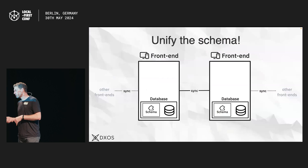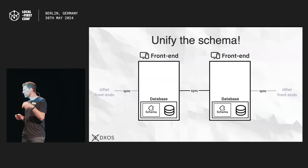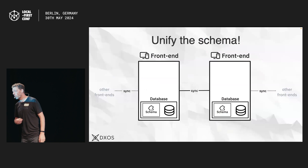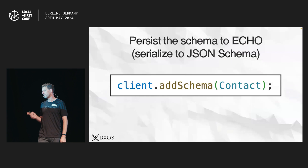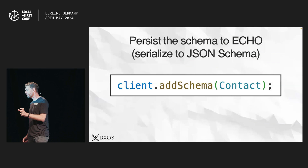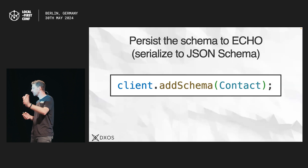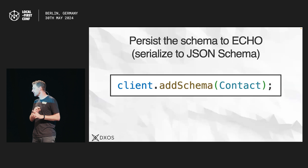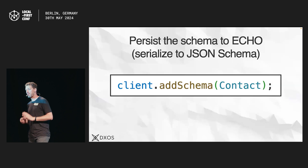Local-first software's flat architecture allows you to unify all your schema definitions in a single place, but we can push this even further. What if you took the schema for the data and saved it to the database? Effect Schema supports serializing the schema as JSON Schema, so this one line will actually persist the schema for that contact to the database. Now you can have new applications that discover new schemas at runtime — they've never heard of a contact, and then they know what to do with them.